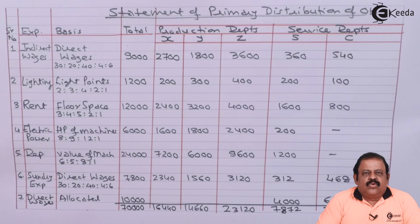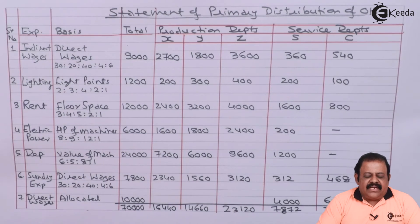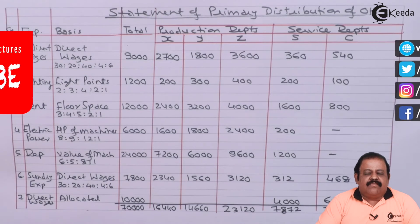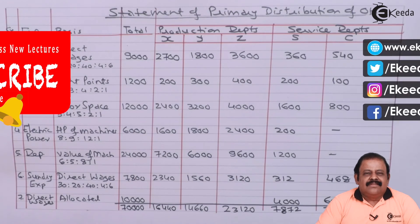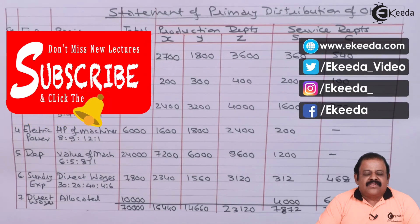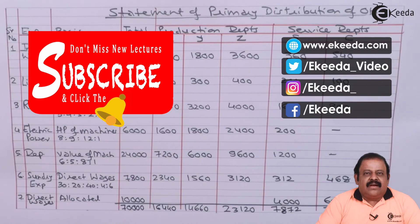In this question we have learned how to allocate sundry expenses based on direct wages when the problem is silent about the basis of allocation. Thanks for watching this video — stay tuned with Ikita and subscribe to our channel Ikita.